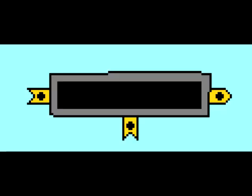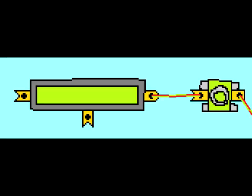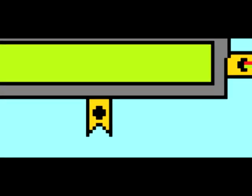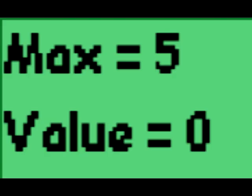The counter counts how many times it received an input signal. Once the value reaches the maximum, it outputs a signal. Aside from the input that is counted, it also has another one used for resetting it. In the properties you can change the maximum and the current value.